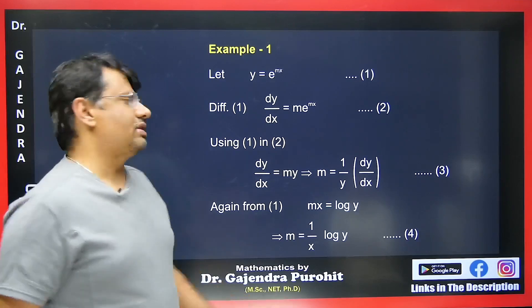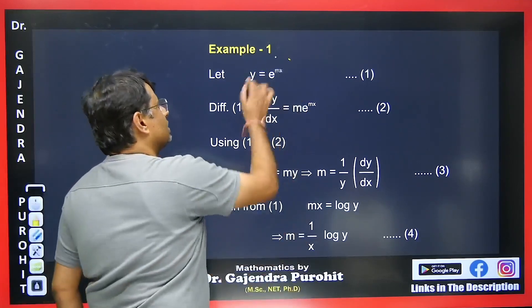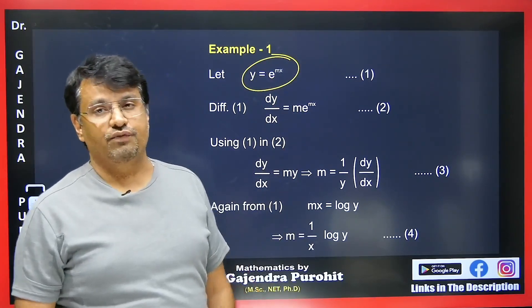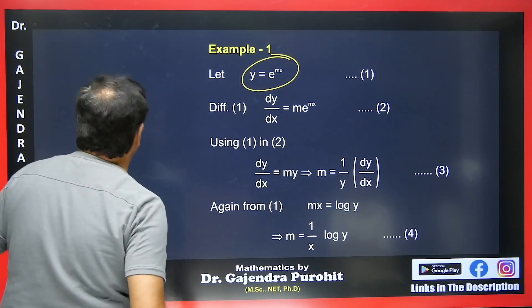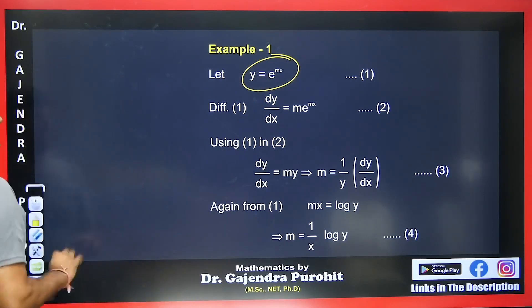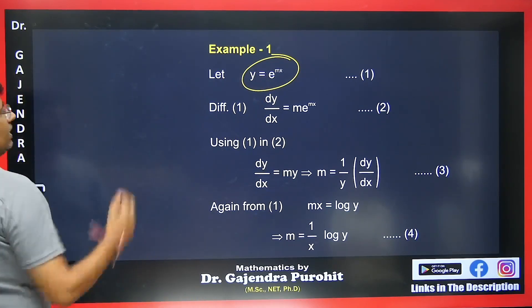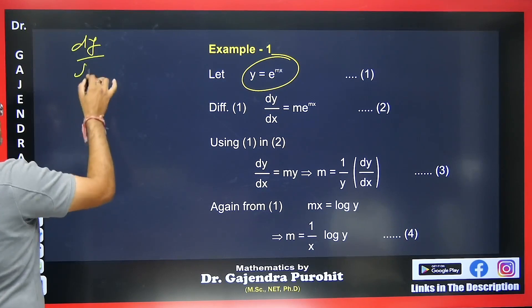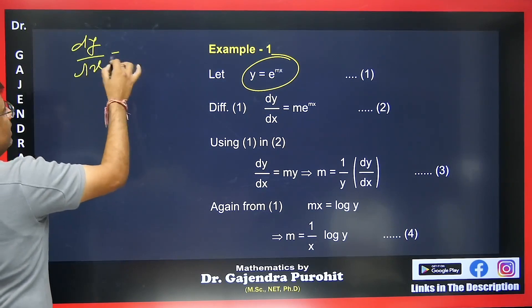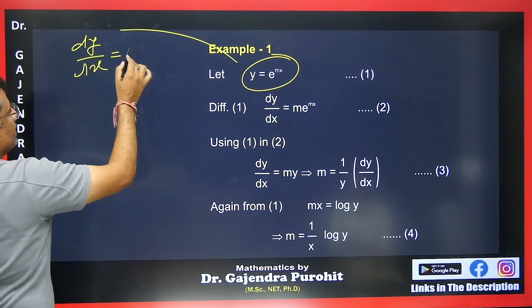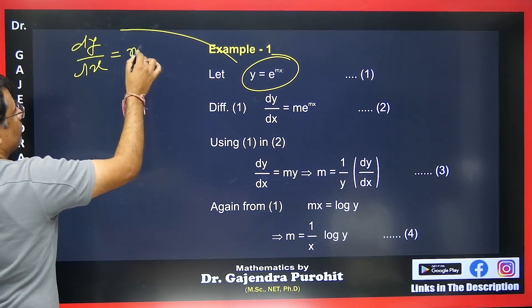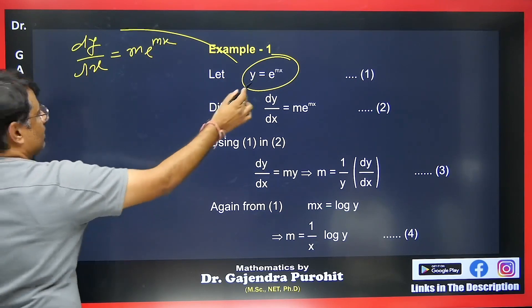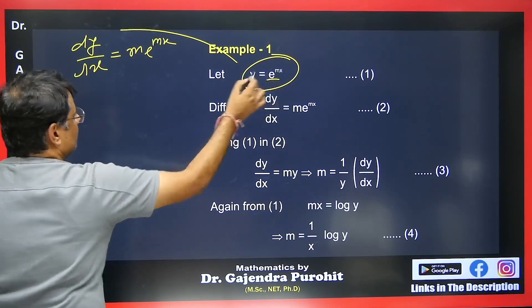First example: y = e^(mx). We need to find the differential equation, where m is a constant to be eliminated. Differentiating: dy/dx = m·e^(mx). Since e^(mx) = y, we get dy/dx = my.